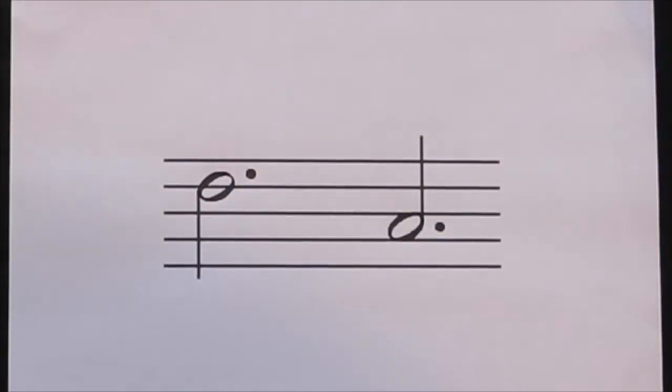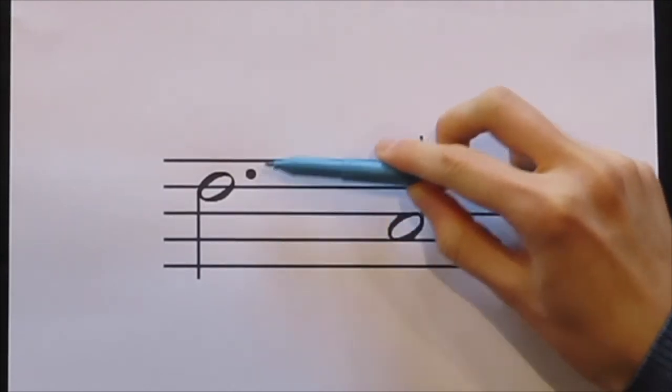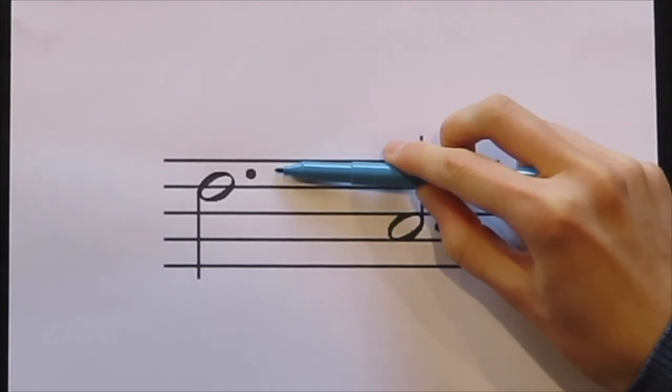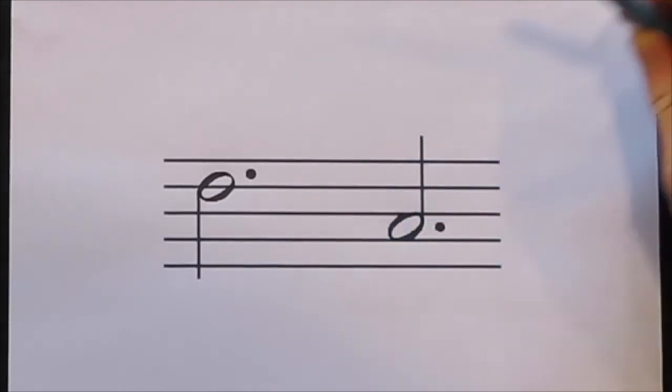When you draw the dot of a dotted note, always draw the dot in a space in which the note lies on the stave. If the note lies on the line, draw the dot in the space immediately above the line.